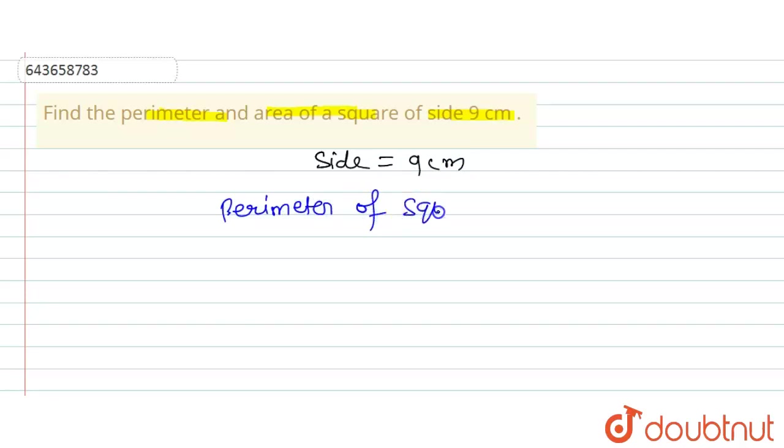So we know that perimeter of square can be calculated by four times of side. Okay, so here we will substitute the values: 4 into side is given as 9, so 36 centimeter is the perimeter of square.